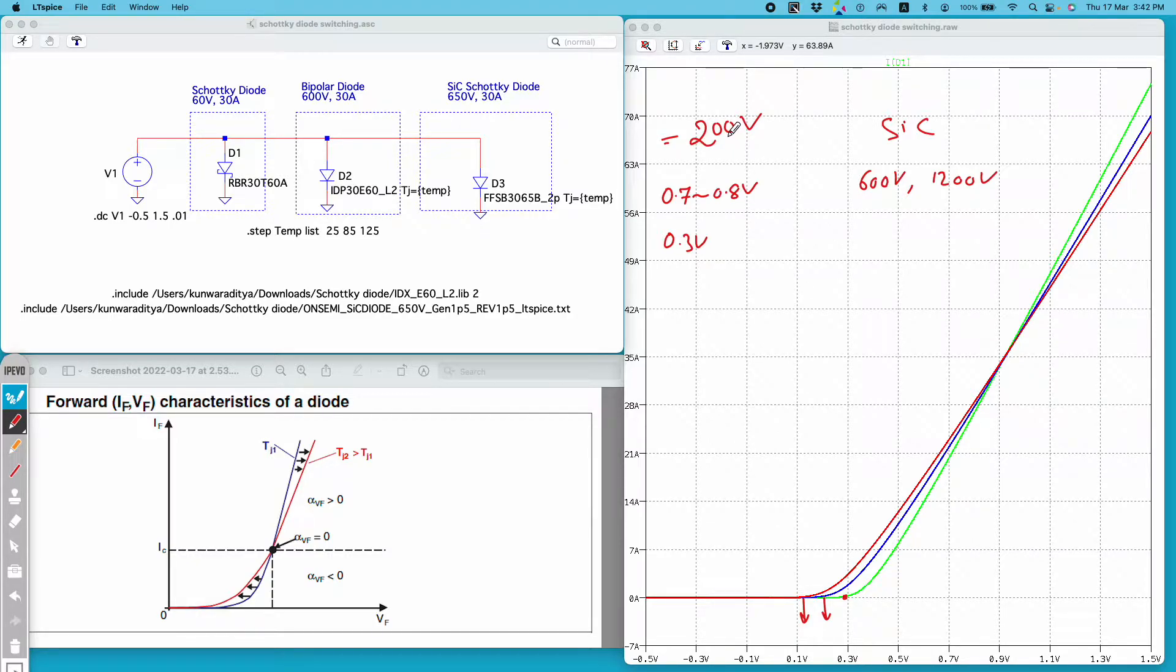Another thing about Schottky diode is that they get heated very quickly in practicals and their leakage current is highly temperature dependent. So you have to be very careful when you are using it in your design. If you are not careful with the thermal characteristics of the diode you may end up damaging it and destroying your project.